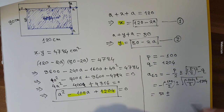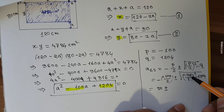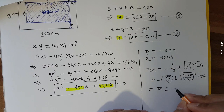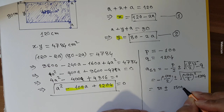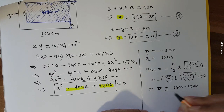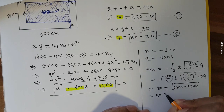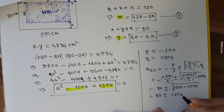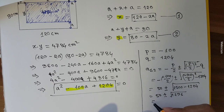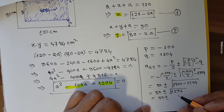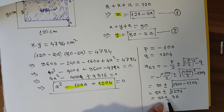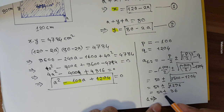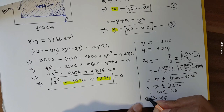Computing inside the square root: 50 squared is 2500, minus 1204 equals 1296. The square root of 1296 is 36. So the two solutions are: a equals 50 plus 36, and a equals 50 minus 36.